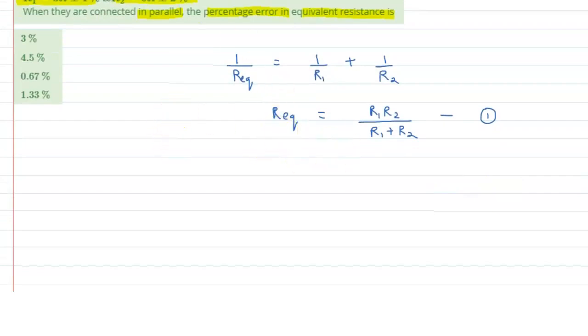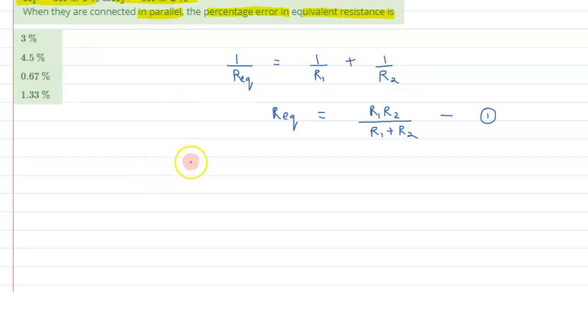So before percentage error we will calculate the relative error because we know percentage error is nothing but relative error into 100. So if we can calculate the relative error, just by multiplying it with 100 we can get the percentage error. So let's proceed.